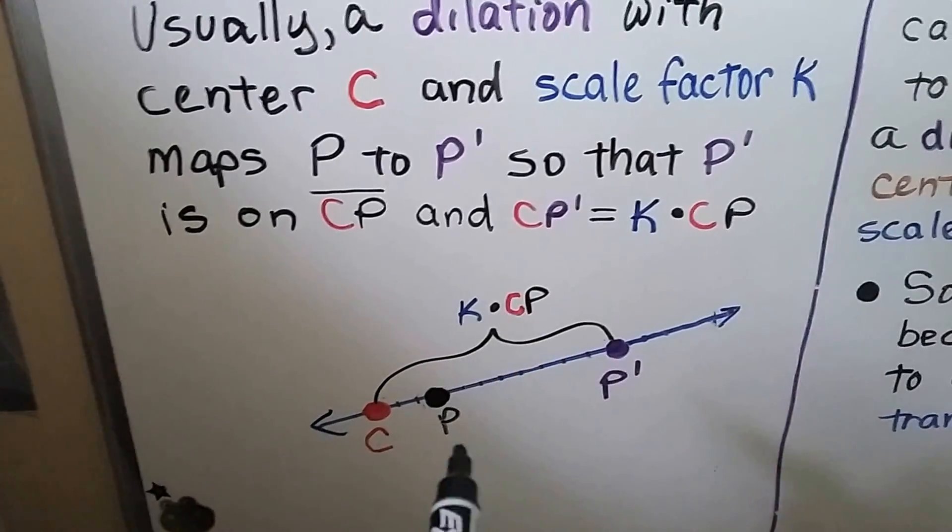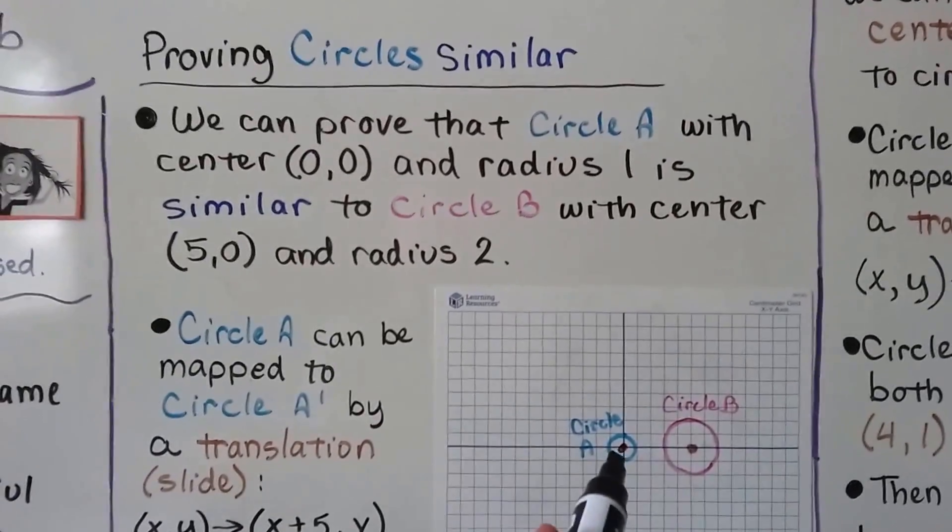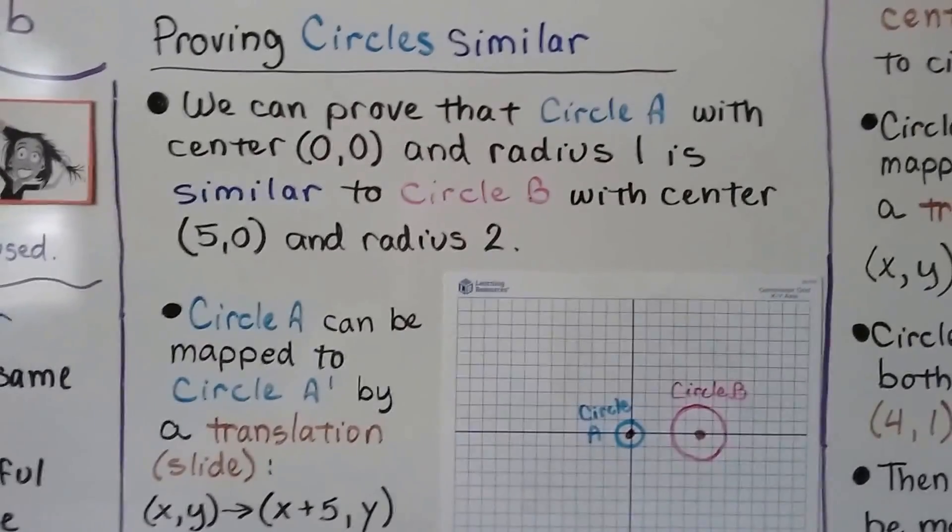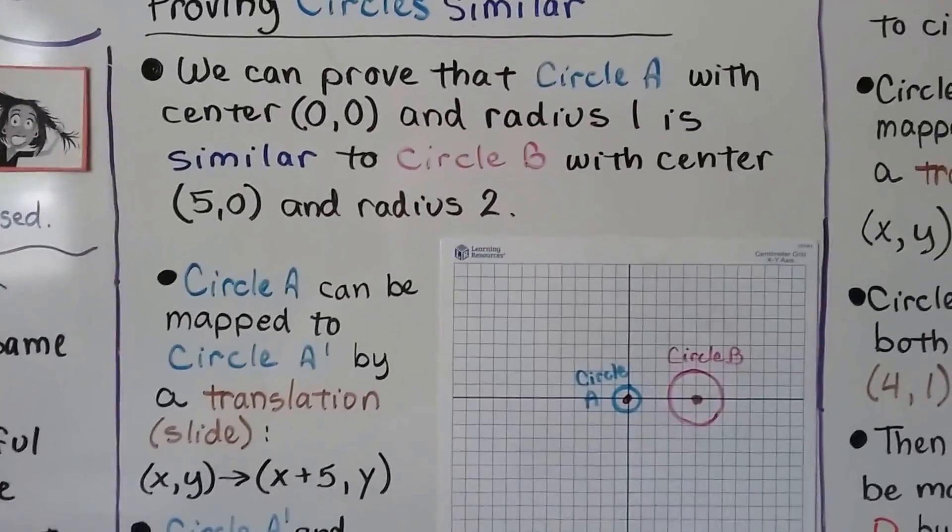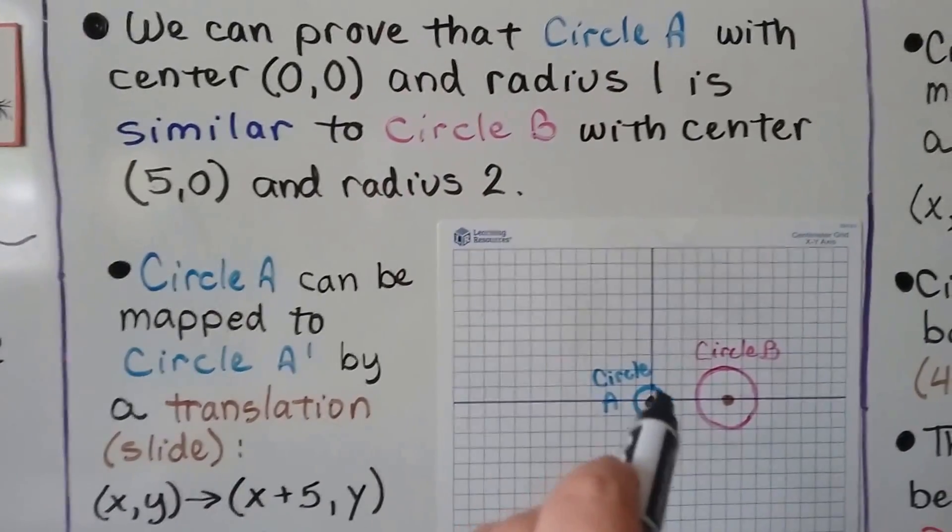k times cp. Proving circles similar, we can prove that circle a, this little one here, with center zero zero, that's right on the origin, and radius one, so we can see it's one square unit around the origin.